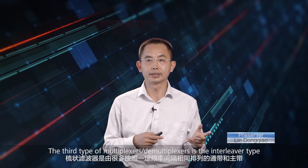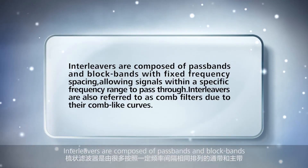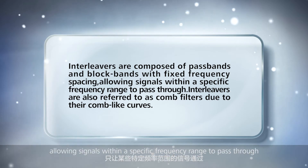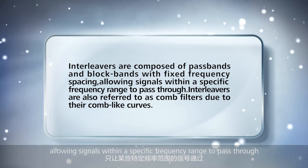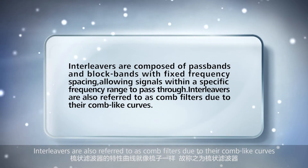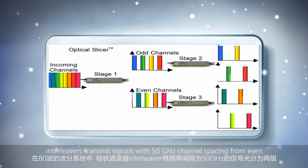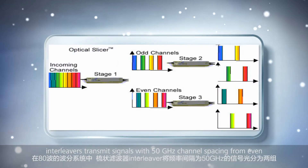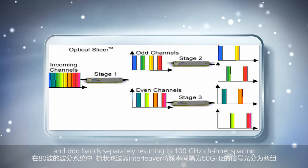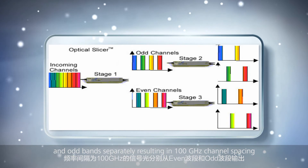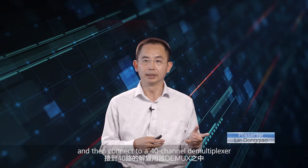The third type of multiplexers and demultiplexers is the interleaver type. Interleavers are composed of passbands and blockbands with fixed frequency spacing, allowing signals within a specific frequency range to pass through. They are also referred to as comb filters due to their comb-like curves. In an 80 channel WDM system, interleavers transmit signals with 50 GHz channel spacing from even and odd bands separately, resulting in 100 GHz channel spacing, and then connect to a 40 channel demultiplexer. In general, interleavers are required for 40-to-80 channel, 48-to-96 channel, and 80-to-160 channel multiplexing.